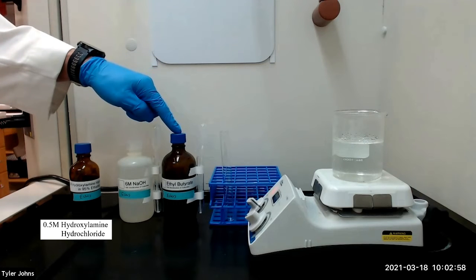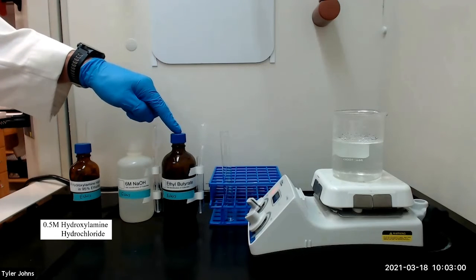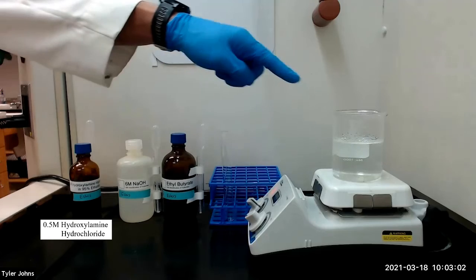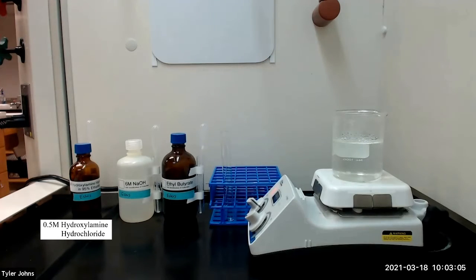We will then dissolve six drops of the ethyl butyrate in the mixture and heat the mixture in a hot water bath until it boils for a few minutes.